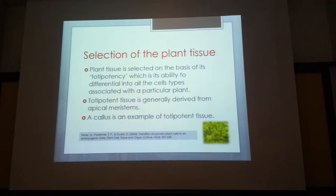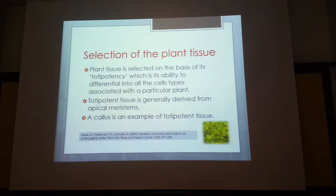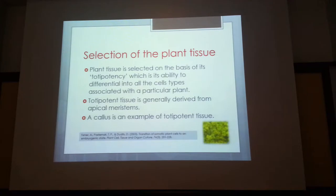You select the plant tissue based on totipotency — the ability of a cell to both divide and differentiate. The most totipotent cells are the actively growing cells. For example, a leaf has an apical meristem at its base. In banana, there is only one meristem stem; you shave off everything else, split it, and end up with a meristem about the size of your thumb, which you can then cut further and establish in tissue culture.